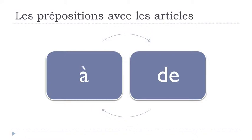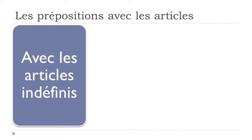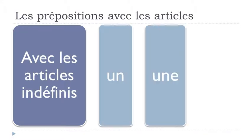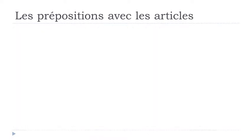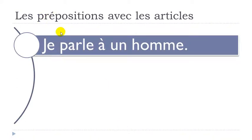We'll concentrate on the way these prepositions will react when they are combined with these articles. The first preposition we will discover will be A, and we'll see it with les articles définis. I took the verb parler, to talk, because it's quite interesting - you can use it with the preposition A meaning to talk TO, and it's also possible to use it with the preposition DE meaning to talk about something.